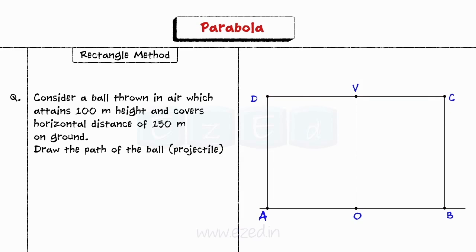Considering the left rectangle AOVD. Step 3. Divide line AD and AO into same number of equal parts, say 6.